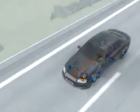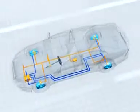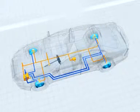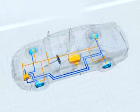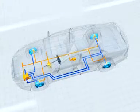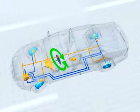ESP comprises the following components: a speed sensor on each wheel, the rotation rate sensor measures the car's rotation around its vertical axis, and the steering angle sensor registers the driver's steering intention.